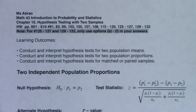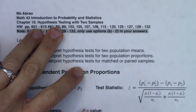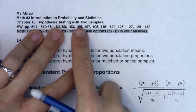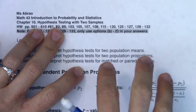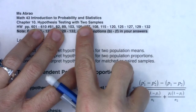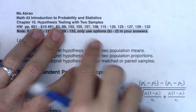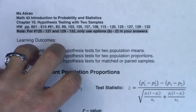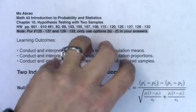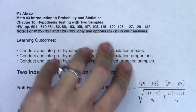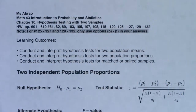All right, gang, we're going to start in on chapter 10. In chapter 10, we're going to continue with hypothesis testing. But instead of one sample, like we saw in chapter nine, we're going to bump up to two samples. Chapter eight was one-sample confidence intervals, chapter nine was one-sample hypothesis tests, and now we're going to move up to two-sample hypothesis tests. You could do two-sample confidence intervals also.